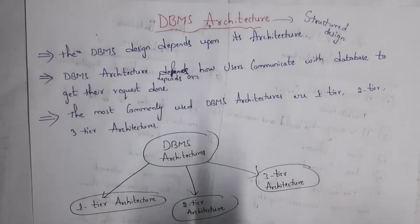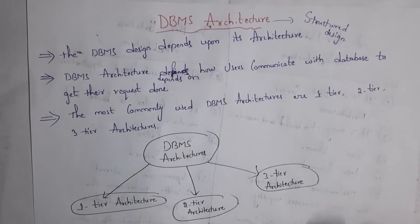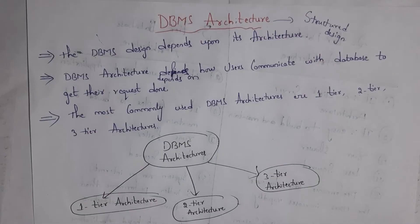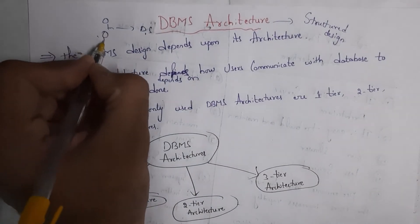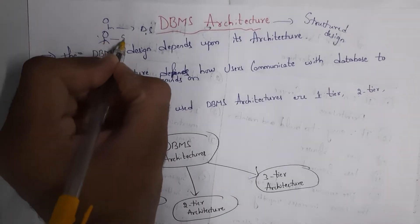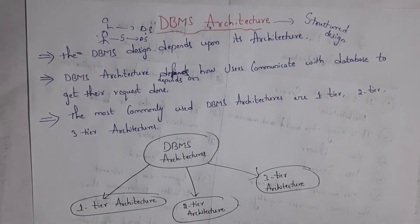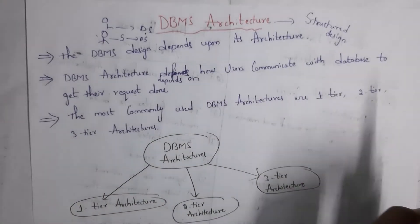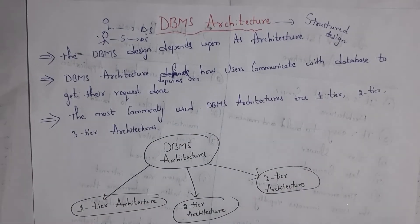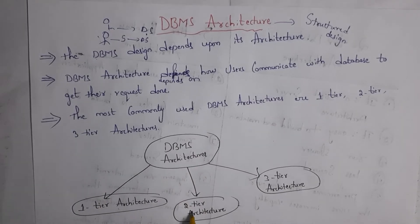But how to design this DBMS architecture? Your database architecture design depends upon how users communicate with the database in order to get their request done. There are so many ways a user will interact with a database — some users will directly communicate with database software, while others will use one software in order to communicate with database software. So DBMS architecture depends on how users communicate with the database. There are three most commonly used DBMS architectures: one-tier architecture, two-tier architecture, and three-tier architecture.